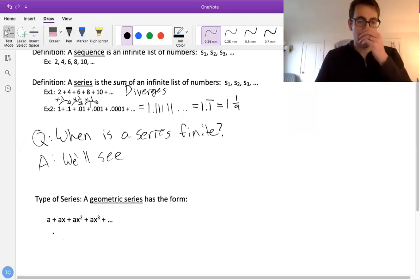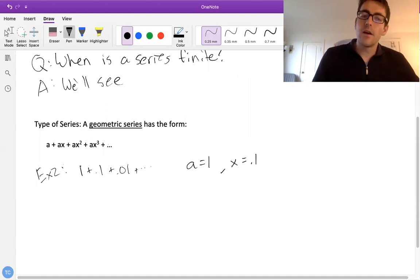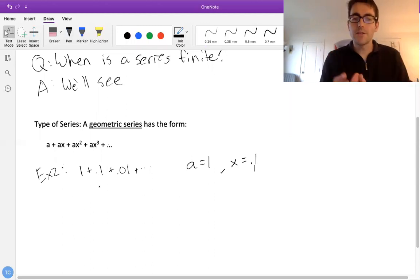So our example two here is a geometric series with a equal to 1 and x equal to 0.1. And again, a way of determining that is saying, how do we get from the first term to the second term? And is that multiplying by something? And does that rule apply for the rest of the series? So that's a geometric series.